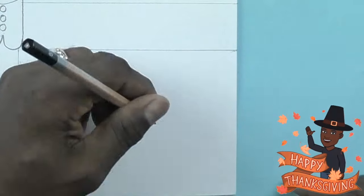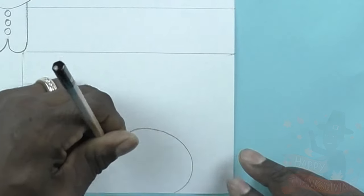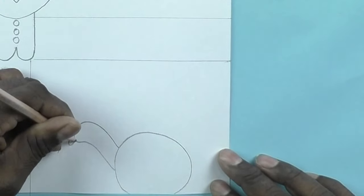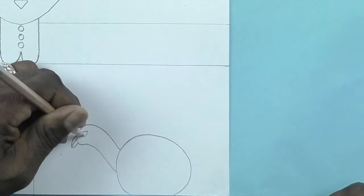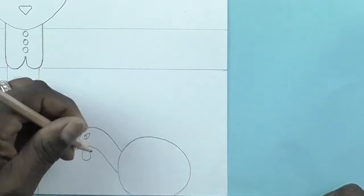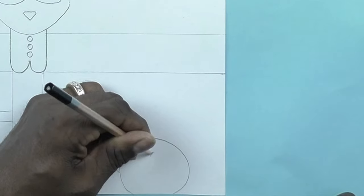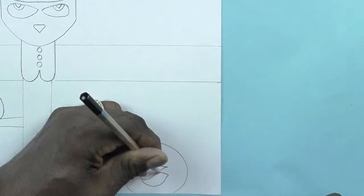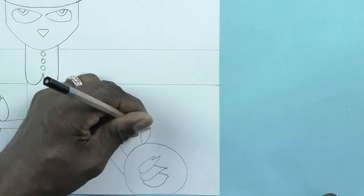Now I've already made my lines for my background, and I'm going to draw my turkey by making a circle, curving line, eyes, beak.